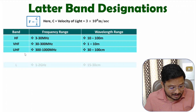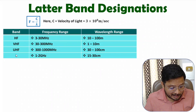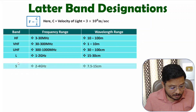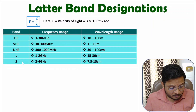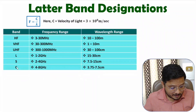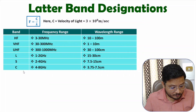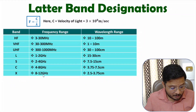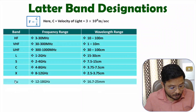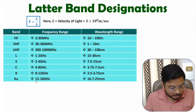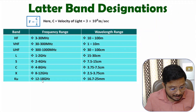The next band is L band, with 1 to 2 gigahertz of frequency. With S band, we have 2 to 4 gigahertz. With C band, we have 4 to 8 gigahertz. With X band, we have 8 to 12 gigahertz. We have Ku band, which has a frequency range from 12 to 18 gigahertz.